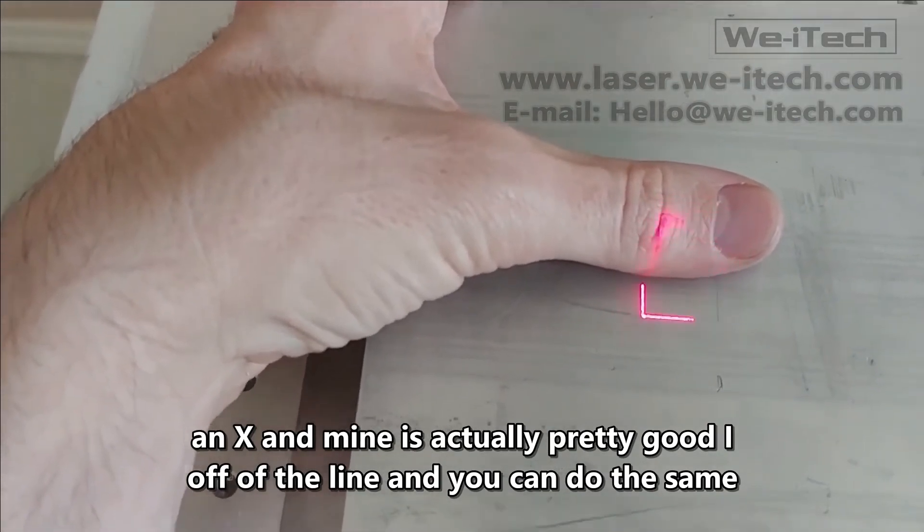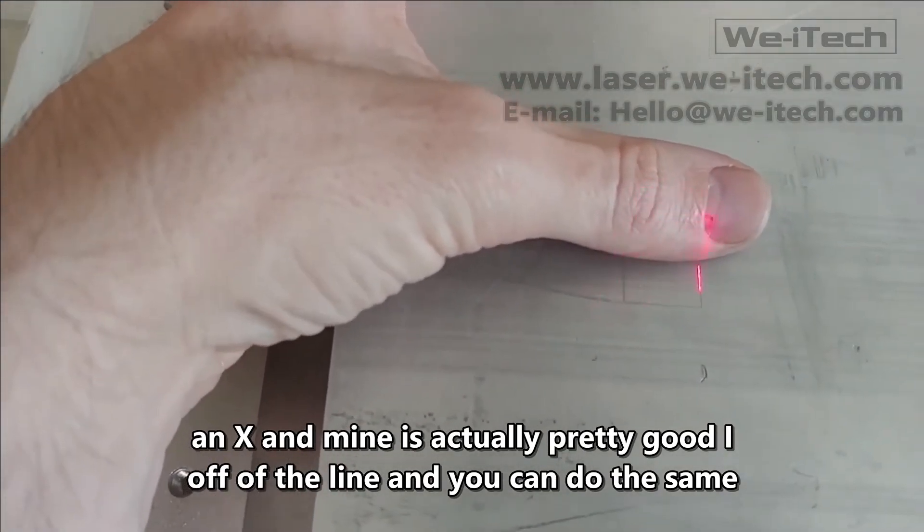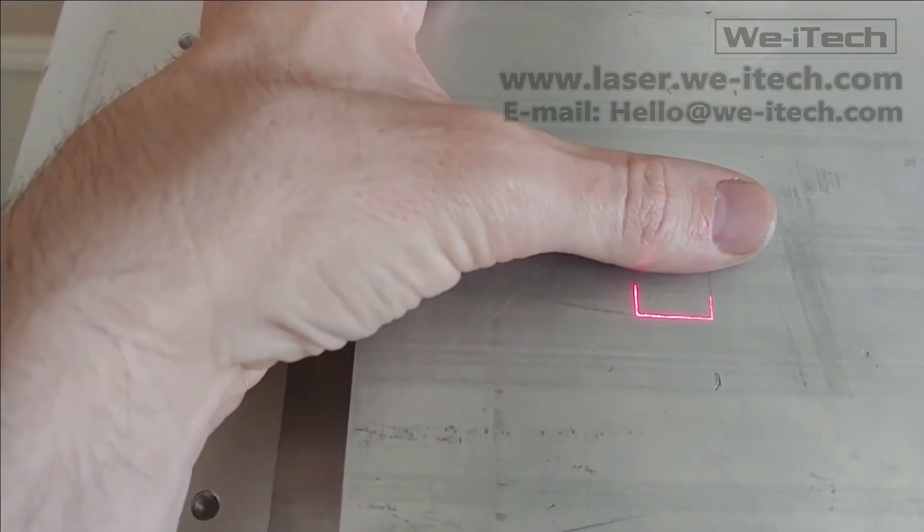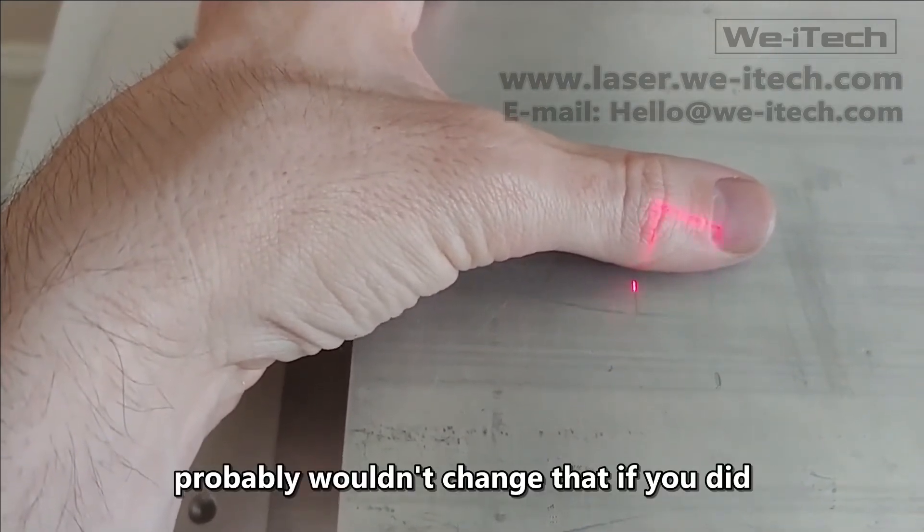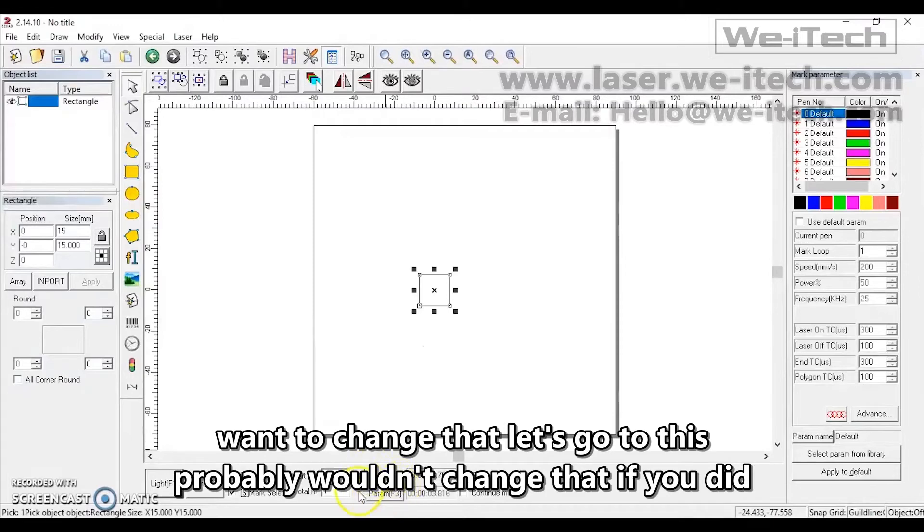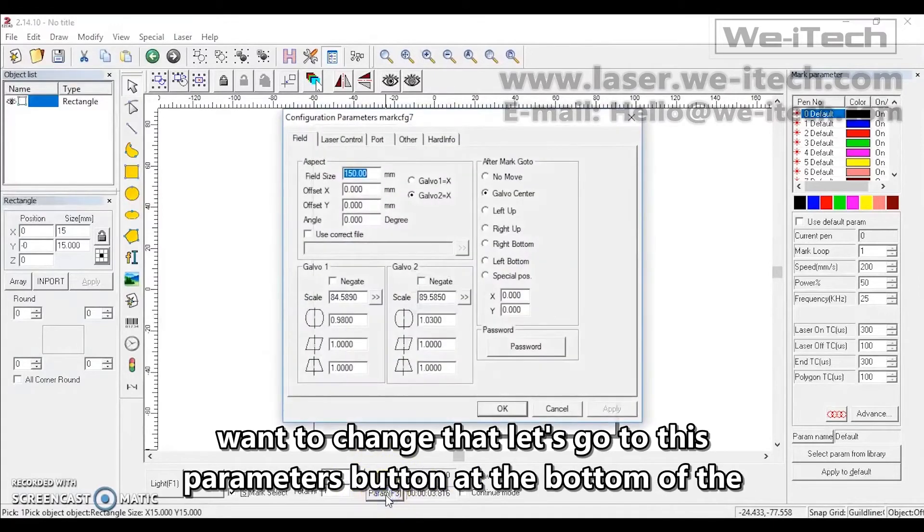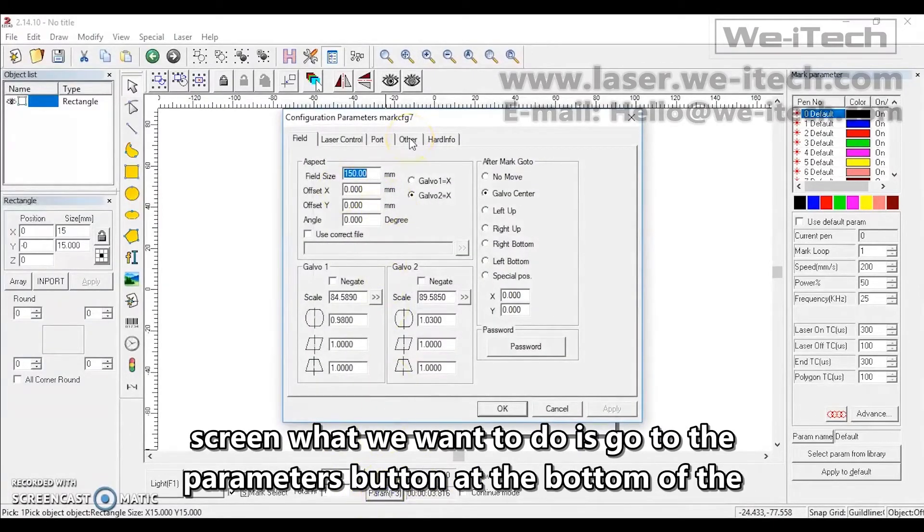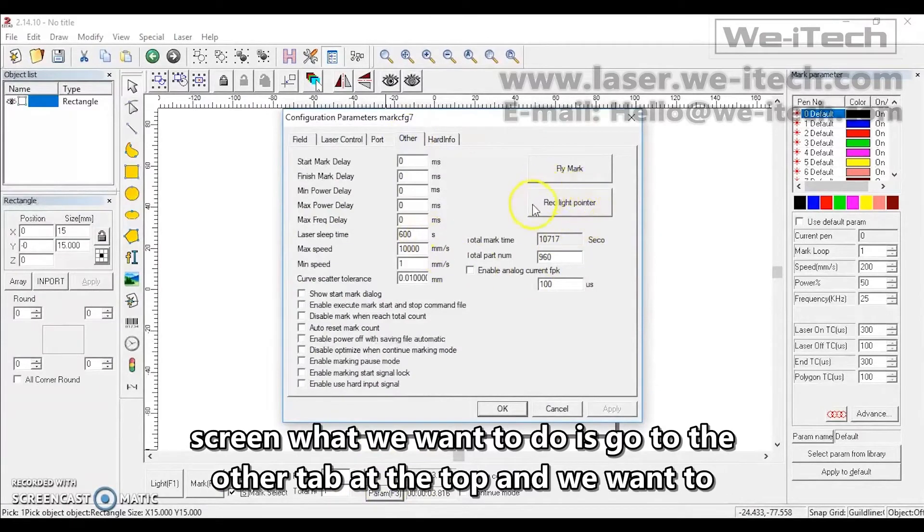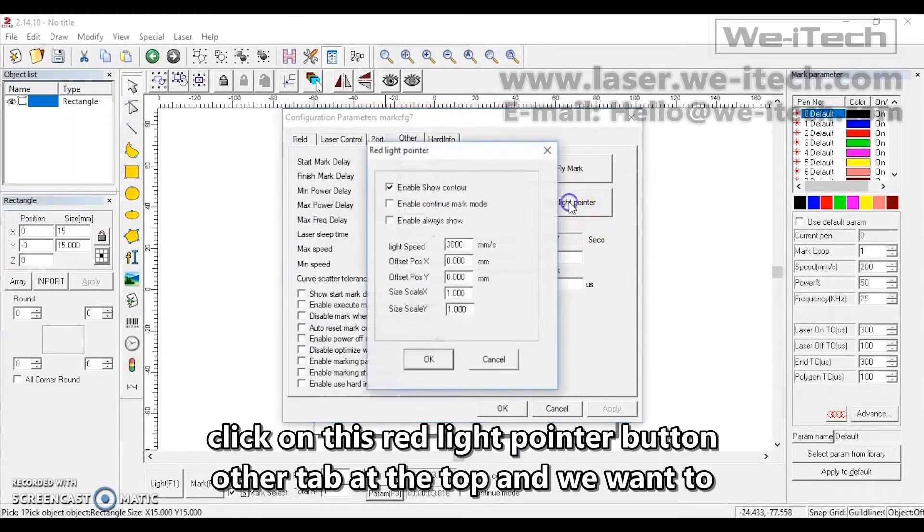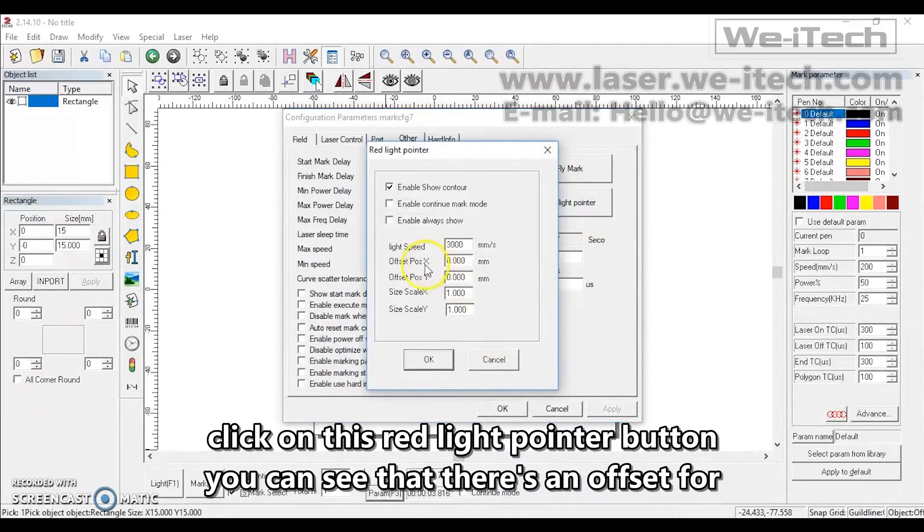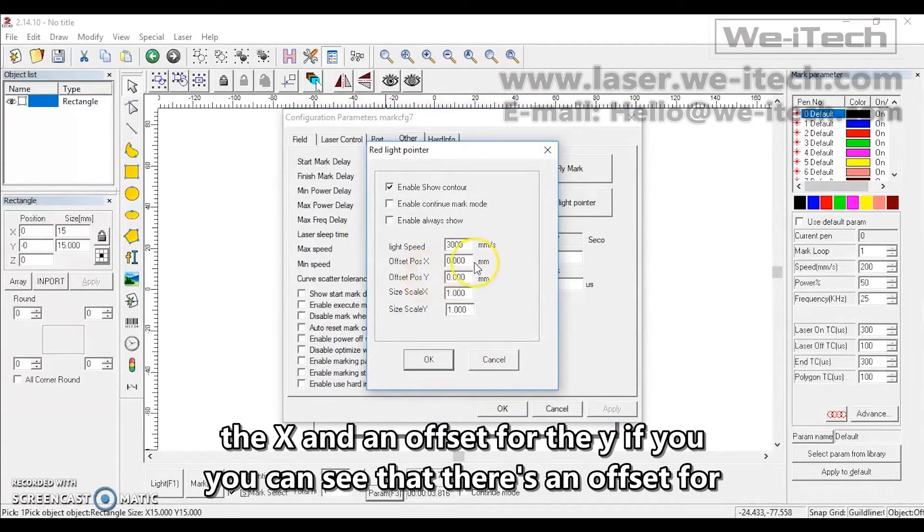And mine's actually pretty good. I probably wouldn't change that. If you did want to change that, let's go to this parameters button at the bottom of the screen. What we want to do is go to the other tab at the top, and we want to click on this red light pointer button. You can see that there's an offset for the X and an offset for the Y.